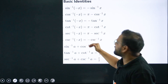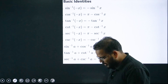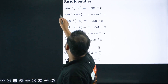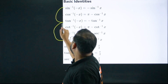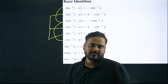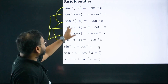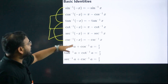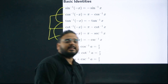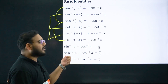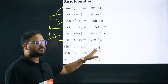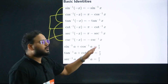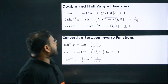Sin, tan, and cosec follow the same approach; cos, cot, and sec follow the same approach. For cos, cot, and sec inverse, operating with a minus sign gives π minus the angle. For sin, tan, and cosec, you simply get minus cosec⁻¹, minus tan⁻¹, or minus sin⁻¹. Another very important formula: sin⁻¹(x) + cos⁻¹(x) = π/2 for the same value. Similarly, tan⁻¹ + cot⁻¹ = π/2, and sec⁻¹ + cosec⁻¹ = π/2.